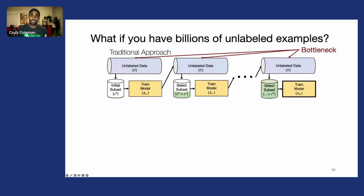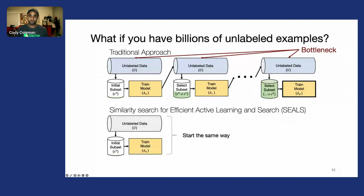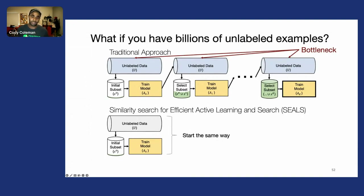This insight led to our approach: Similarity Search for Efficient Active Learning in Search of Rare Concepts. We start the same way—we have a large amount of unlabeled data, some initial labeled subset, and we train a model on that initial subset.